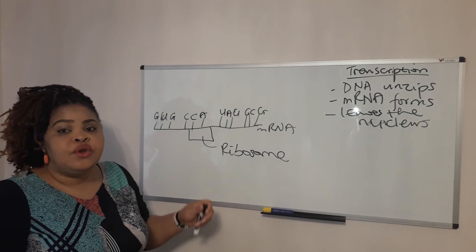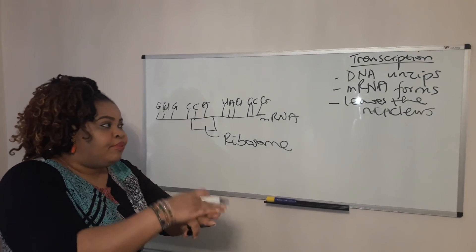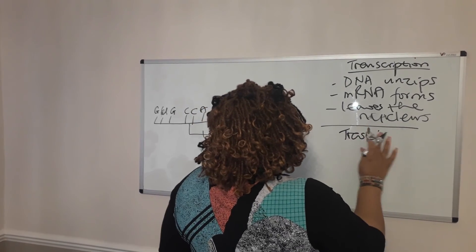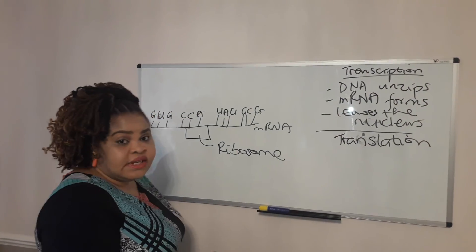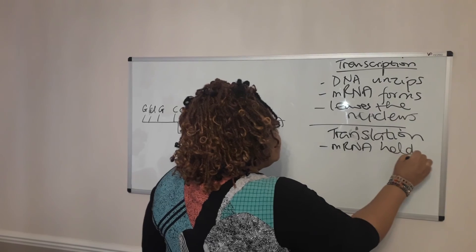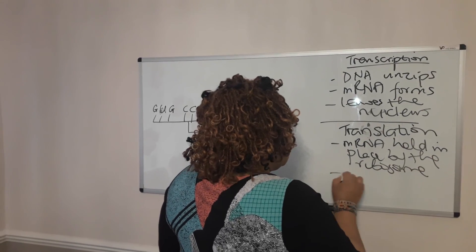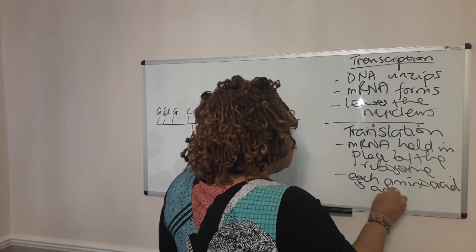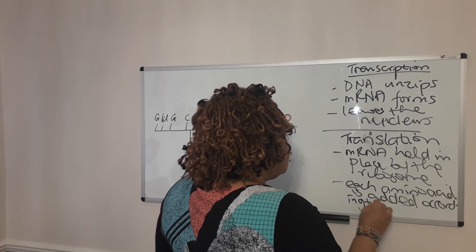For the proteins to form, there has to be a connection of amino acids, because amino acids are the building blocks for protein. So this is the stage of translation. Remember I told you that protein synthesis happens in two stages: you have the transcription and you have the translation. At the translation, mRNA is held in place by the ribosome, and then each amino acid is added according to the base.